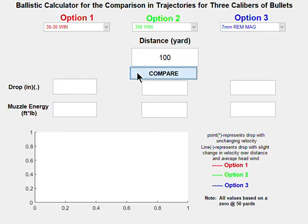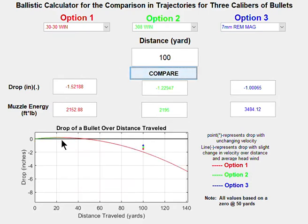Hit compare. As you can see, the three points are on the plot and it is graphing the motion of the bullets as they are fired. These outputs show the drop in inches for each different option with respective caliber that was selected and the muzzle energy that each of those calibers has.